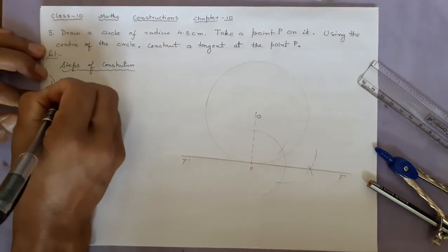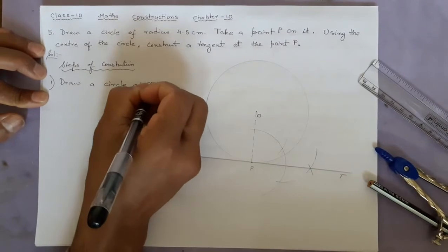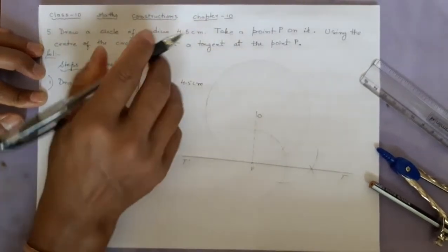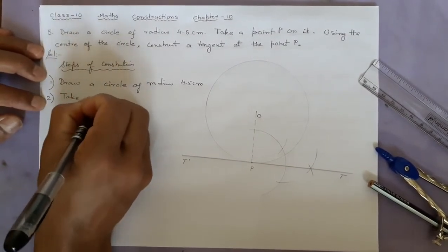Number 1: Draw a circle of radius 4.5 centimeters. Number 2: Take a point P on it.